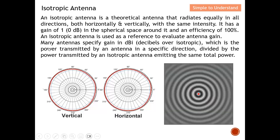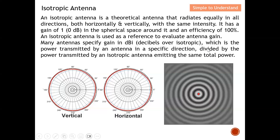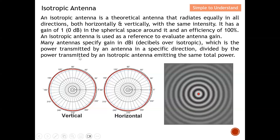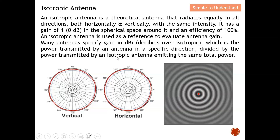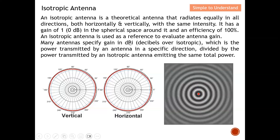In short, you transmit power in a particular direction, and this power is divided by the same power transmitted by an isotropic antenna. This ratio allows you to specify antenna gain in terms of dBi — decibels over isotropic.